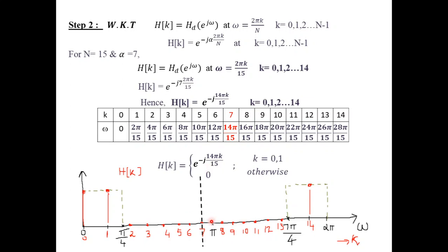Considering the point of symmetry, we need only consider values of k from 0 to 7 for the filter of order N=15. This is exploitation of the symmetrical property. We can see that in the range k=0 to 7, H(k) has a finite magnitude of 1 only for k=0 and k=1. For all other values of k, H(k) is 0.